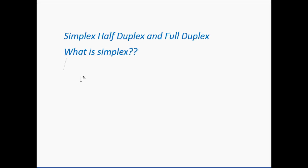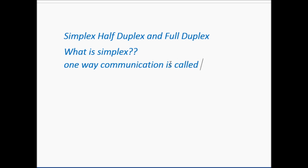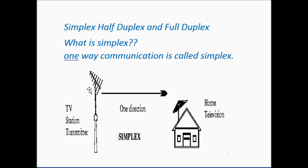Simplex is basically one-way communication, where a device is either transmitting or receiving only. For example, in television, the home receiver only receives the TV signal. There is no feedback. If there is no reply in the communication system, then this type of communication is known as simplex. One-way communication is called simplex.